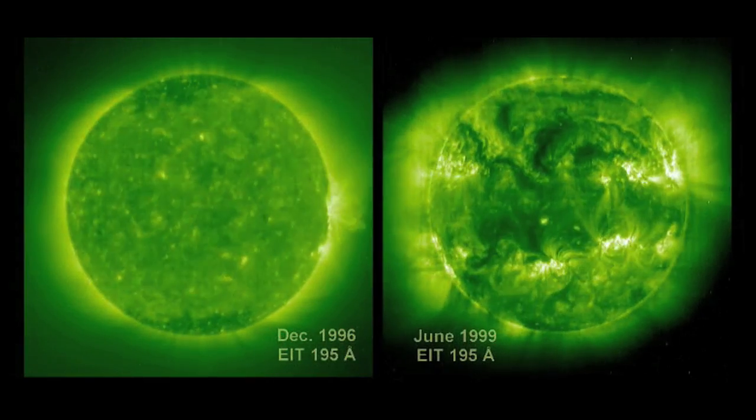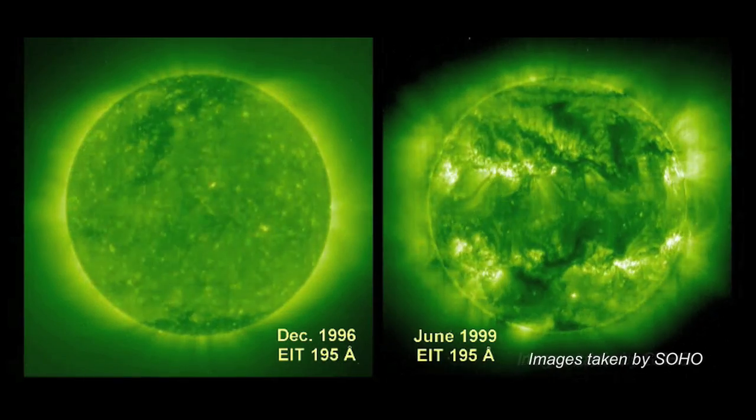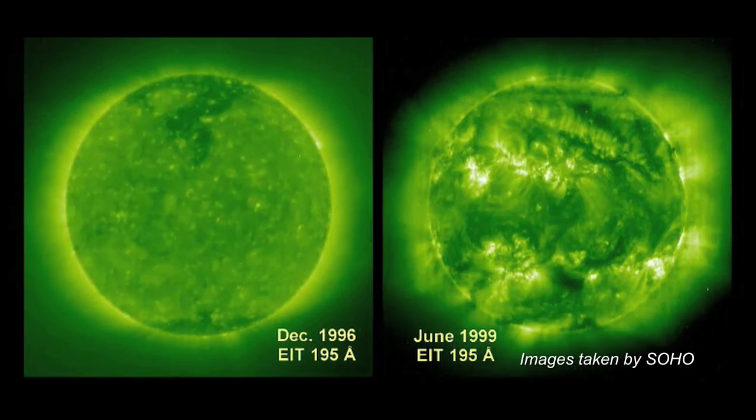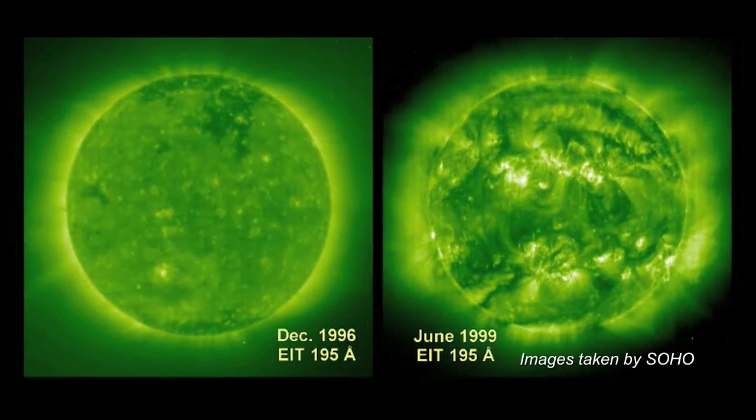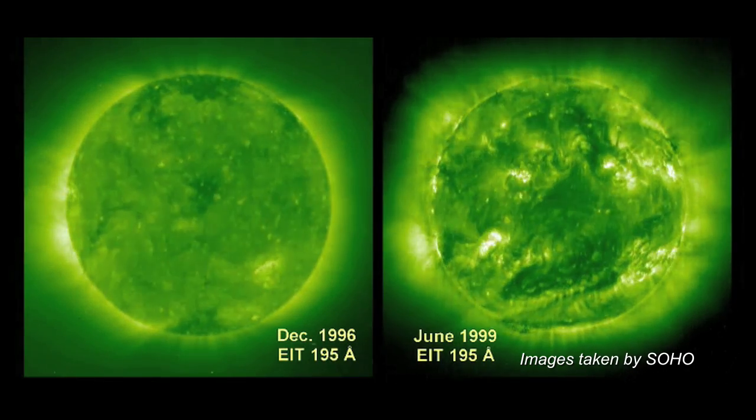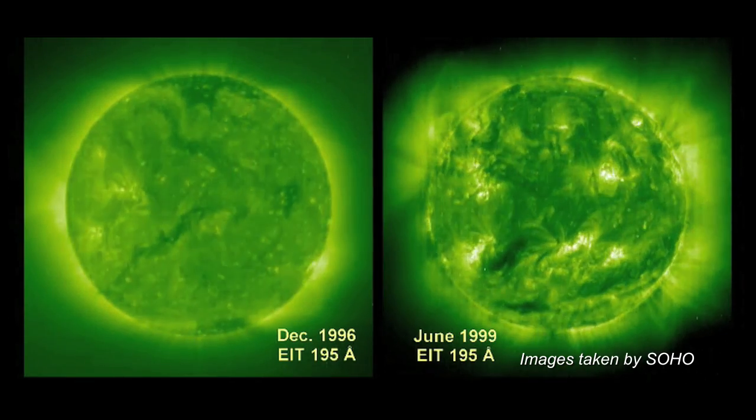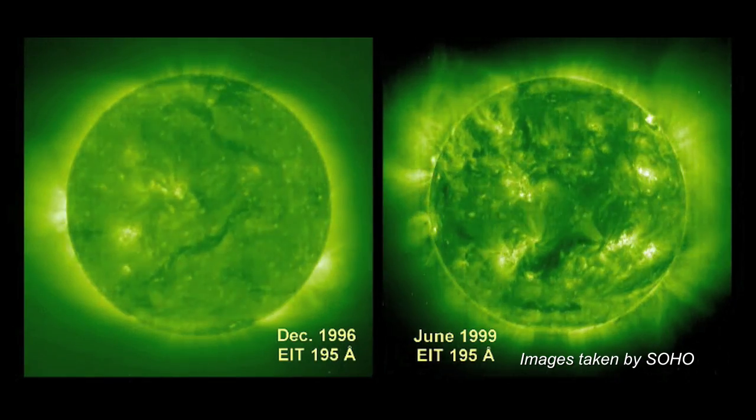Many years of observing the Sun have revealed that solar activity appears to vary in a regular manner from a maximum to a minimum over an 11-year cycle. This solar cycle coincides with changes to the polarity of the Sun's magnetic field, which reverses around the time of a solar maximum.